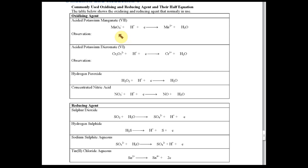You need to memorize these oxidizing agents and reducing agents without referring to the chemical equations of the reactions. Straight away, when you see potassium dichromate, you should know it's an oxidizing agent. When you see sulfur dioxide, you should know it's a reducing agent — even if you don't know what chemical reaction it undergoes.